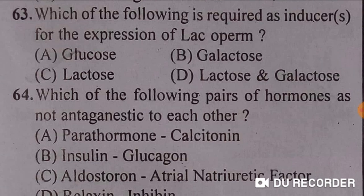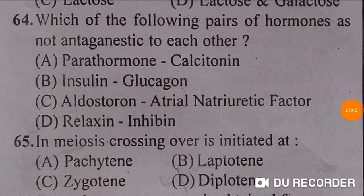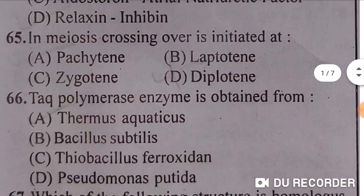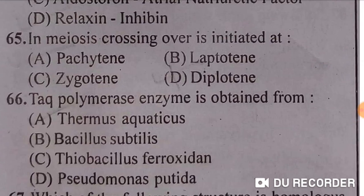Next: which of the following is required as an inducer for the expression of the lac operon? Lactose is required as the inducer. Next: which of the following pairs of hormones are not antagonistic to each other? Relaxin and inhibin — option D is correct. Next: in meiosis, crossing over is initiated at the pachytene stage — option will be the correct answer; crossing over is initiated at the pachytene stage.